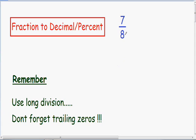So the first thing I'm going to do with this example, 7 over 8, is change it into a decimal. In order to change this fraction into a decimal, we need to use long division. The fraction 7 over 8 is the same thing as 7 divided by 8. So I'm going to use long division and divide 7 by 8 and turn this into a decimal.